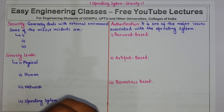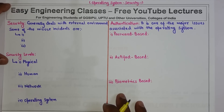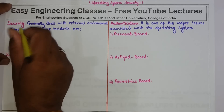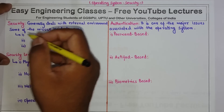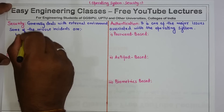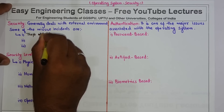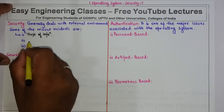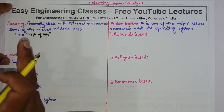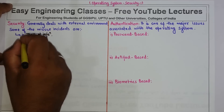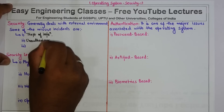In any operating system there are lots of information, so if a hacker or a malicious user tries to steal that information, that can be a part of an external threat — that incident can be theft of information. Then if a malicious user tries to modify the data present in an operating system, that also is a misuse incident, and that comes under unauthorized modification of data.